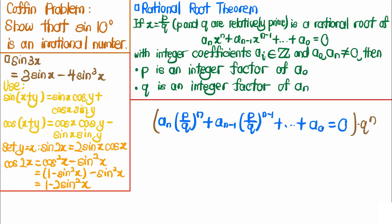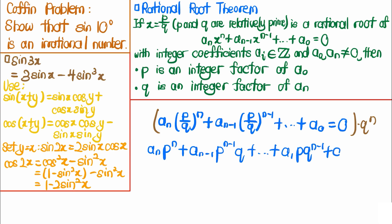Multiplying through by qⁿ gives us aₙ·pⁿ + aₙ₋₁·pⁿ⁻¹·q + ... + a₁·p·qⁿ⁻¹ + a₀·qⁿ = 0. We then move the a₀·qⁿ term to the right-hand side and factor out p on the left-hand side.